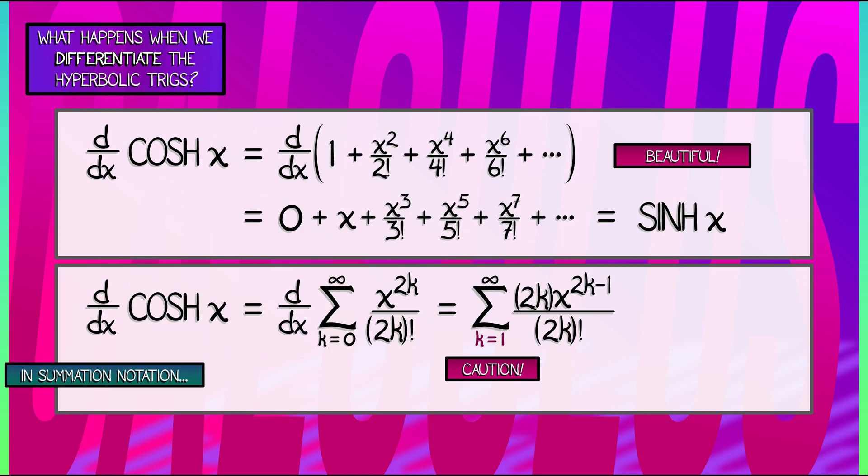Now, if we re-index this series, if we let j be equal to k minus 1, that is, if we let k be equal to j plus 1, then using that change of index,